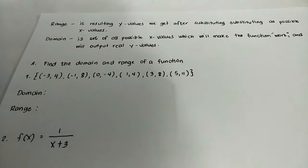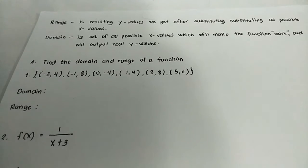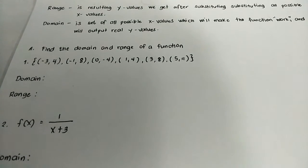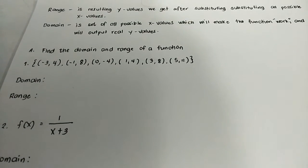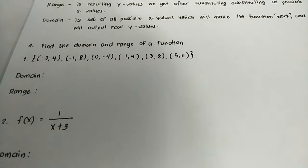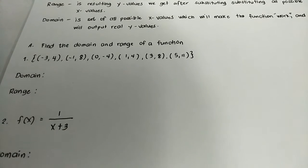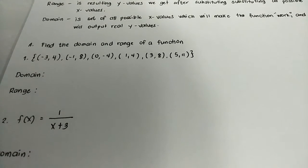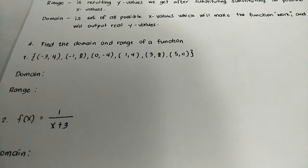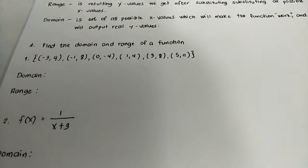Any real number or any negative number can be the domain. So let us have an example — number one: find the domain and range of a function. We have points: negative three and four, negative one and eight, zero and negative four, one and four, three and eight, and five and eleven.